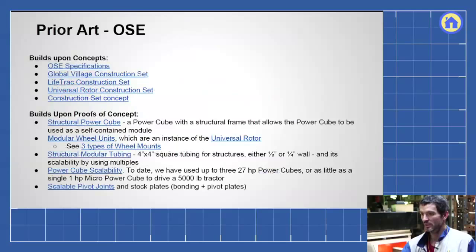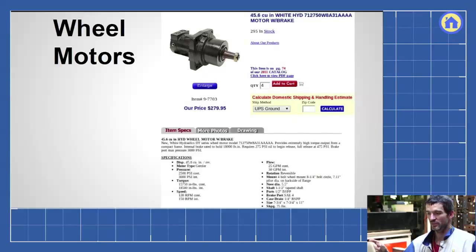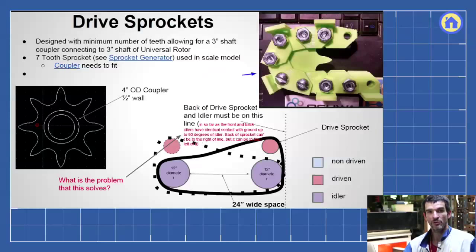We've gone through some calculations also which are in another document. The main concepts here are in this document. We're going through how we design the tracks with the idlers and drive sprockets. We use very large powerful wheel motors that are about 15 to 17 thousand inch pounds of force. You can find them in surplus center.